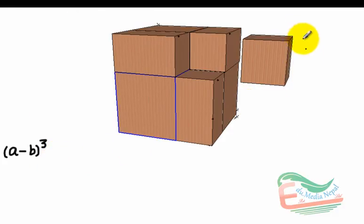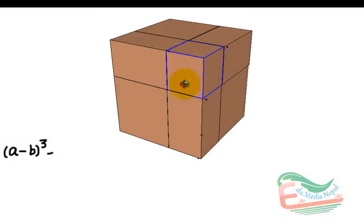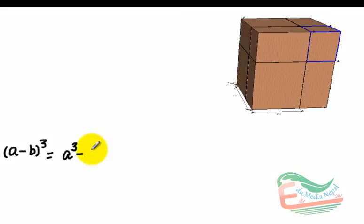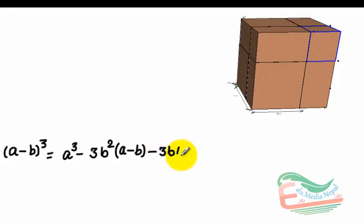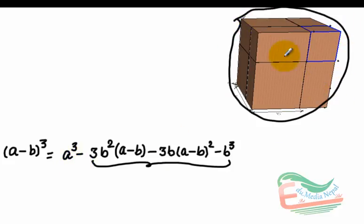Then the identity can be established in this way. A minus b whole cube — that is, the volume of this block — equals a cube, the total volume, minus: three blocks having volume b square times a minus b, and another three blocks having volume b times a minus b whole square, and one block having volume b cube. So if we subtract these quantities from the volume of the cube, we get the volume of the small cube having dimension a minus b — that is, we get a minus b whole cube.